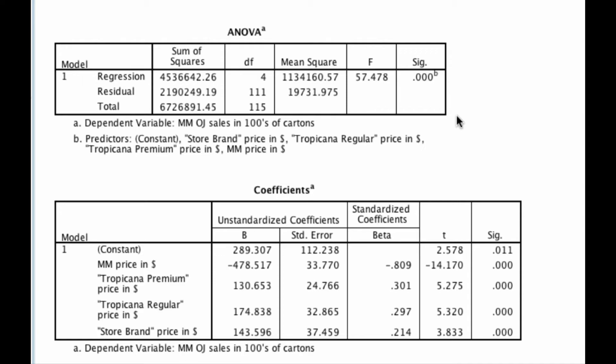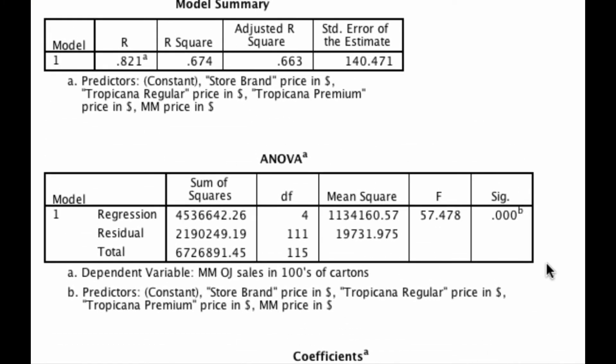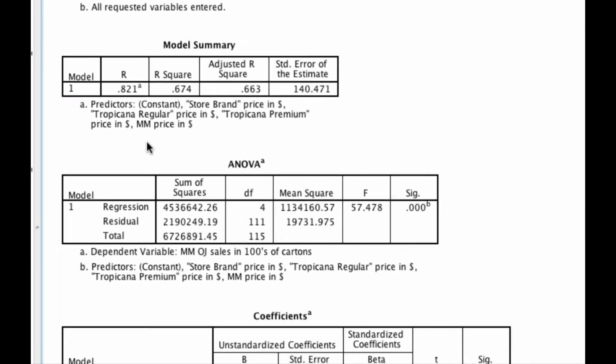And if you recall, in a previous video when we just ran the regression of Minute Maid price on sales, we saw that the adjusted R squared was about 0.4, or about 40% of all the fluctuation in sales could be explained just by my own prices. Well, when we include all four of these prices in the equation, what we find is that the adjusted R squared is actually 0.66. In other words, we're able to explain an additional 26% of the variation. We can now predict two thirds of all variation in sales just with these four different price variables.